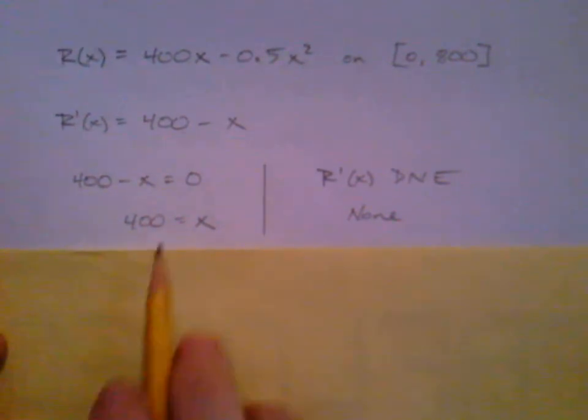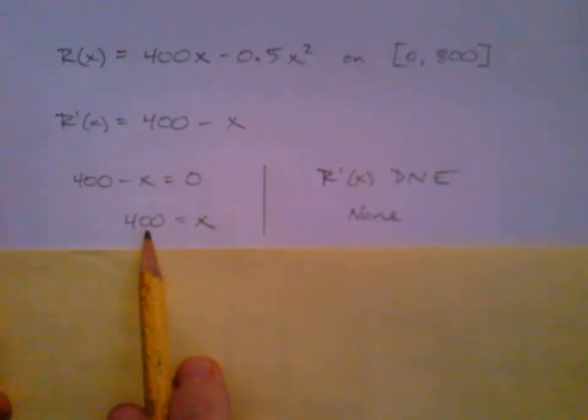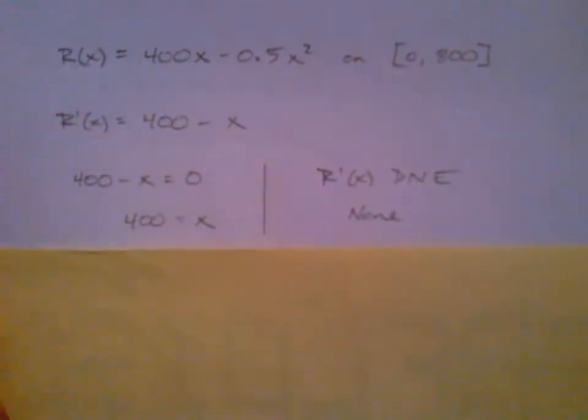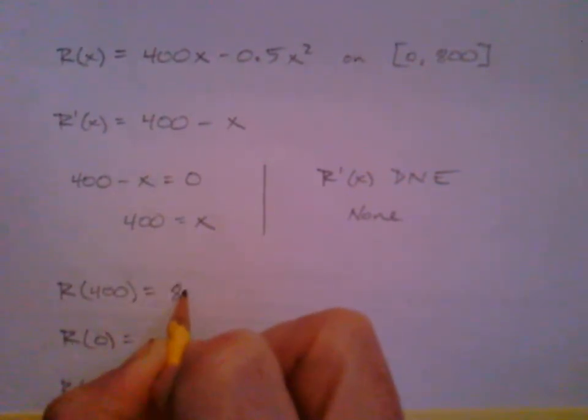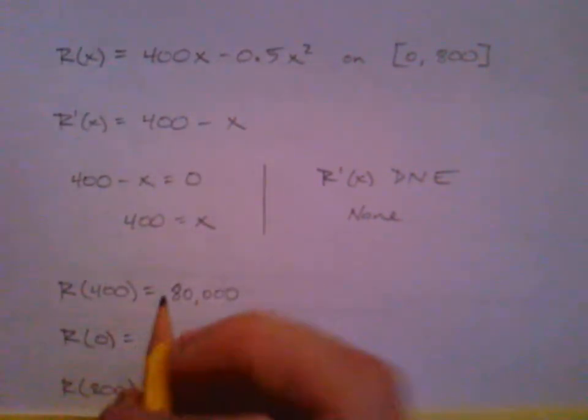Well, I don't think there's much to say here. X equals 400, and there's never a time when it doesn't exist. We've got one critical, and we've got our endpoints. We're going to take our critical, put it into the original revenue. We're going to take both endpoints, put that into the original revenue, and see what we get. I haven't done this yet. 400 times 400 minus 0.5 times 400 squared. I got 80,000.